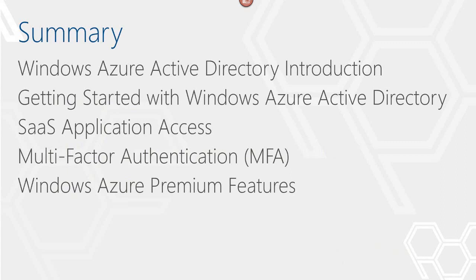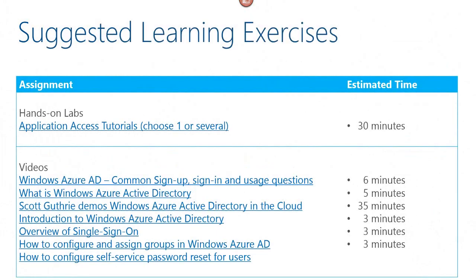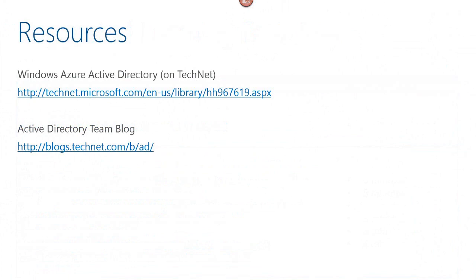To summarize this module: we introduced the Windows Azure Active Directory service and learned how to get started. We saw how to perform basic tasks in the directory, managed user access to SaaS applications, and explored the multi-factor authentication service. We concluded with a review of the premium features of Windows Azure AD. These are some suggested learning exercises consisting of a hands-on lab and selected videos to augment the learning experience. Be sure to check out the Windows Azure Active Directory landing page on TechNet and the Active Directory team blog for product announcements and additional content.